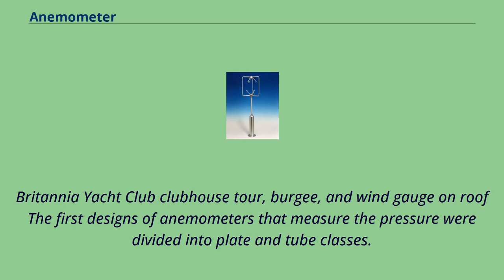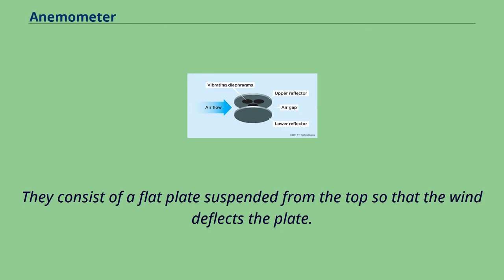The first designs of anemometers that measure the pressure were divided into plate and tube classes. These are the first modern anemometers. They consist of a flat plate suspended from the top so that the wind deflects the plate.